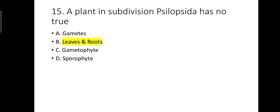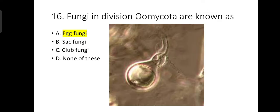Number 15: A plant in subdivision Psilopsida has no true leaves and roots. Number 16: Fungi in division Oomycota are known as egg fungi; they are also known as false fungi.